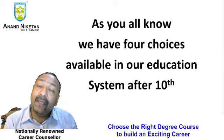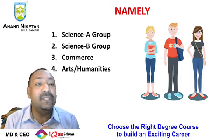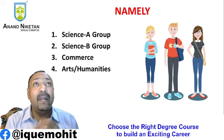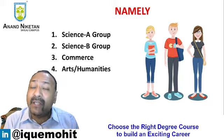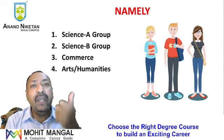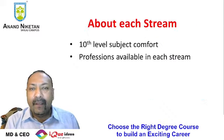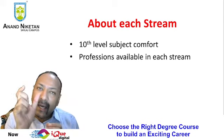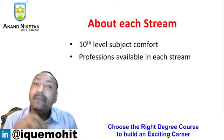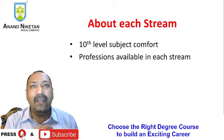As we all know, in the Indian education system after 10th, there are currently 4 streams or subject combinations available: Science A Group (physics, chemistry, mathematics), Science B Group (physics, chemistry, biology), Commercial Studies (accounts, statistics, business studies, economics), and Arts or Humanities (history, political science, psychology, sociology, geography, philosophy). I will now share which child should go into each combination and what professions are available in each stream.